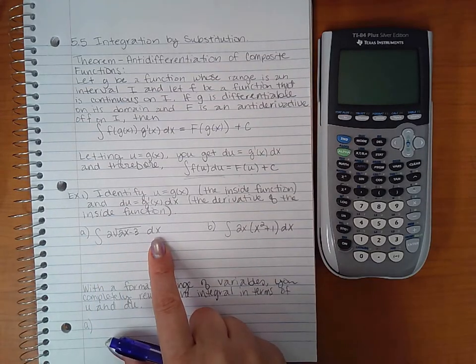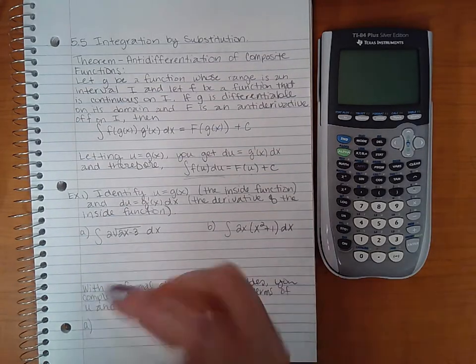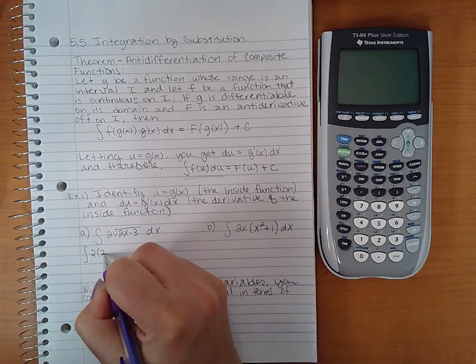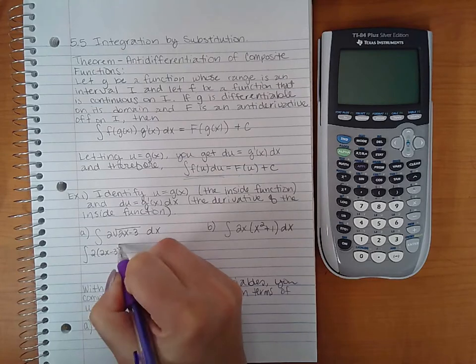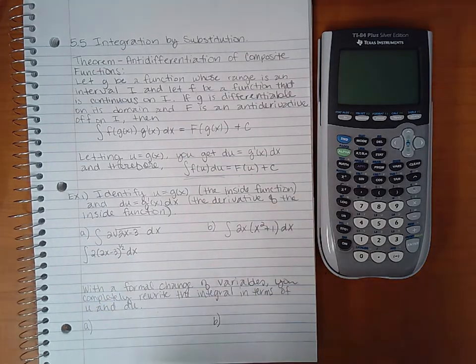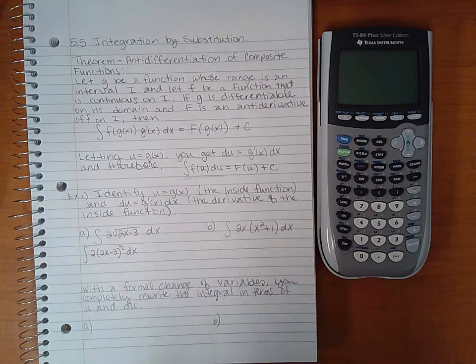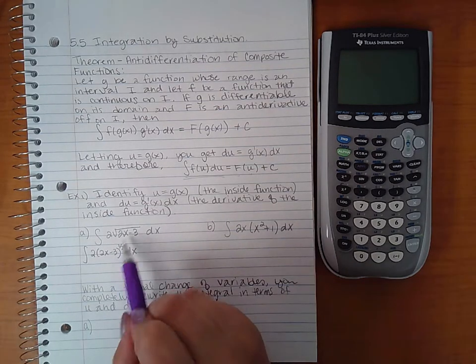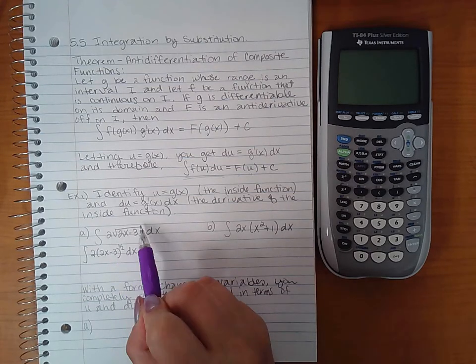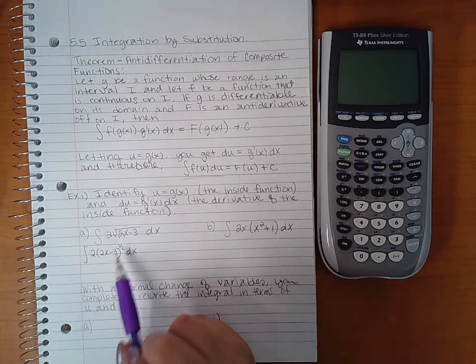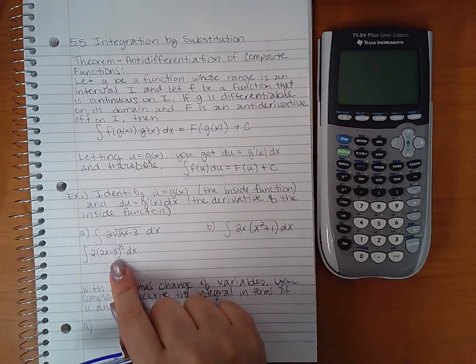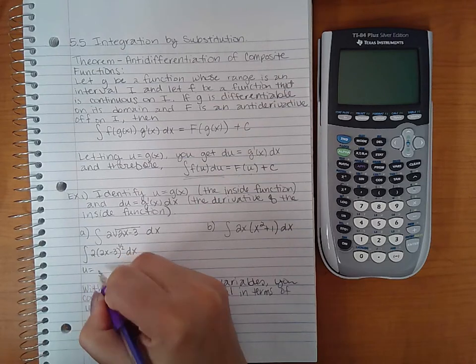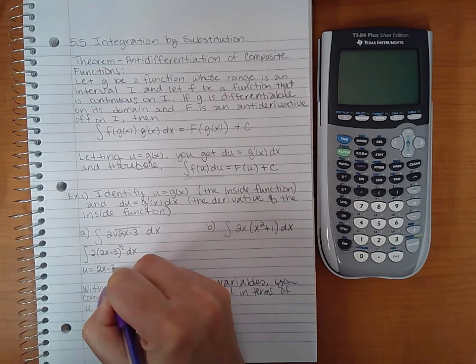If I look at this problem here, remember we always rewrite radicals. So this radical could essentially be rewritten as a power of one half. And if you do that in their notation, it's pretty easy to identify what is the inner function because this is inside of a radical and inside of the parentheses. So it's pretty easy for part a to identify what is the inside function. The inside function u would be 2x minus 3.